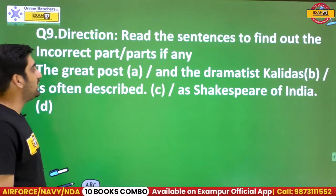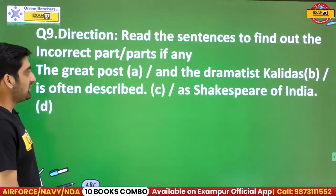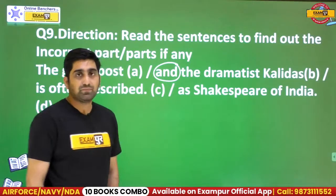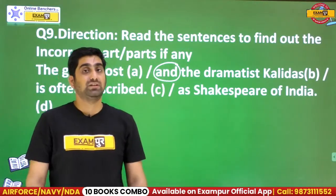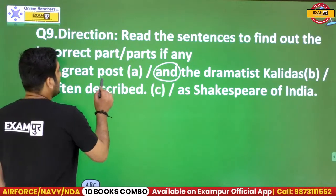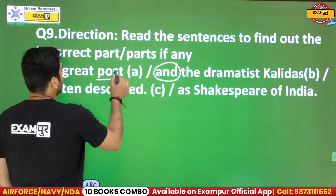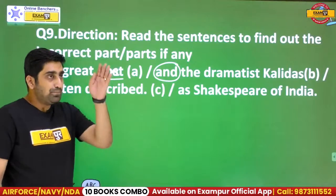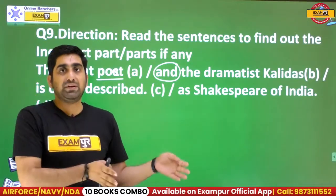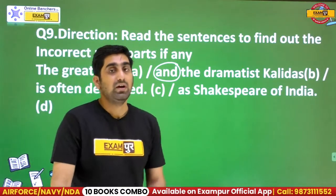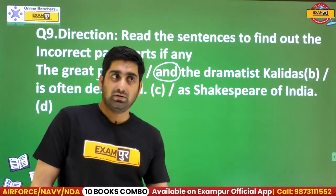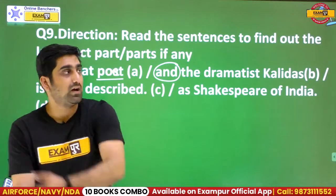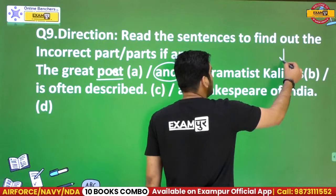Coming to the next question on the screen, it says 'the great poet and the dramatist.' We have a sentence with two nouns joined by the conjunction 'and.' What has been combined? Poet and dramatist — these can refer to one person or two people. For example, one person can be both a poet and a teacher. But here we are talking about one person only, who is Kalidas. Since there is one person, we will consider there is only one noun. If there is only one noun — one person — then one determiner will be used.